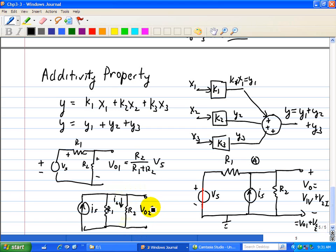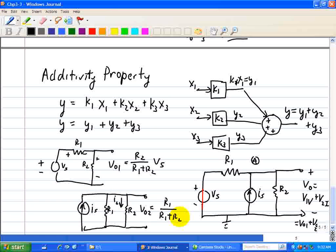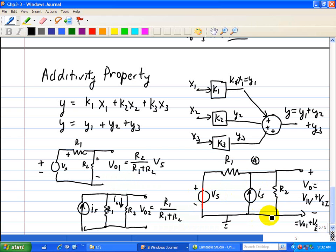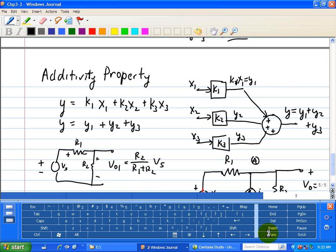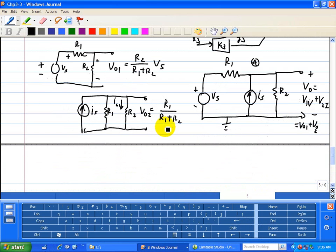But VO2 is just using the current divider. It's the opposite resistor, which is R1, over R1 plus R2. So that's our analysis so far. And then because this circuit is linear, we add the outputs VO1 and VO2. We're not finished yet because this part is just I2. That's the current divider part, so we need to multiply this by R2 to get the voltage VO2 due to this current source IS.